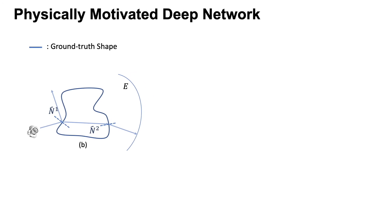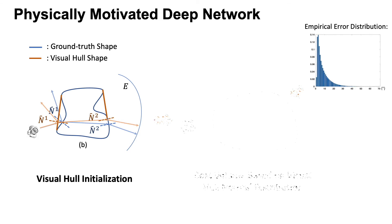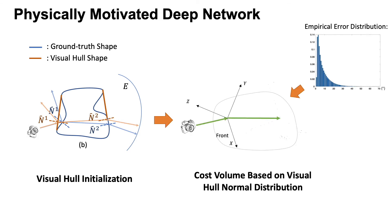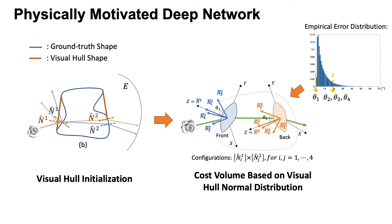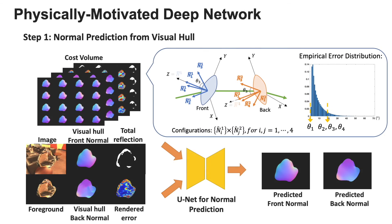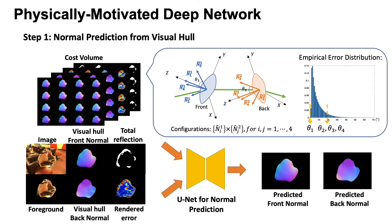We start from a visual hull initialization, which is used to build an effective cost volume by sampling front and back normals according to the visual hull normal error distribution. Our normal prediction network then combines RGB images, normals, total reflection mask, and rendering error, together with the cost volume to predict refined front and back normals.